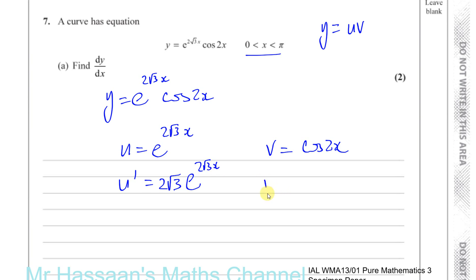My v dash — the differential of v with respect to x. If I differentiate cosine of something, I get minus sine of the same thing: minus sine of 2x. And again, if there's a function inside the function, I must multiply by the differential of what's inside. The differential of 2x is 2, so I multiply by 2, giving v dash equals minus 2 sine 2x.